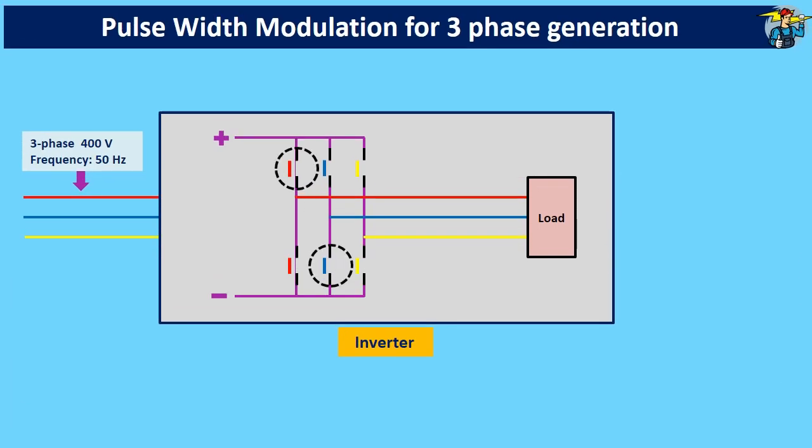In the inverter, if you close the upper red color and lower blue color IGBT switches, flow of current through the load related to the voltage is from red line to blue line.